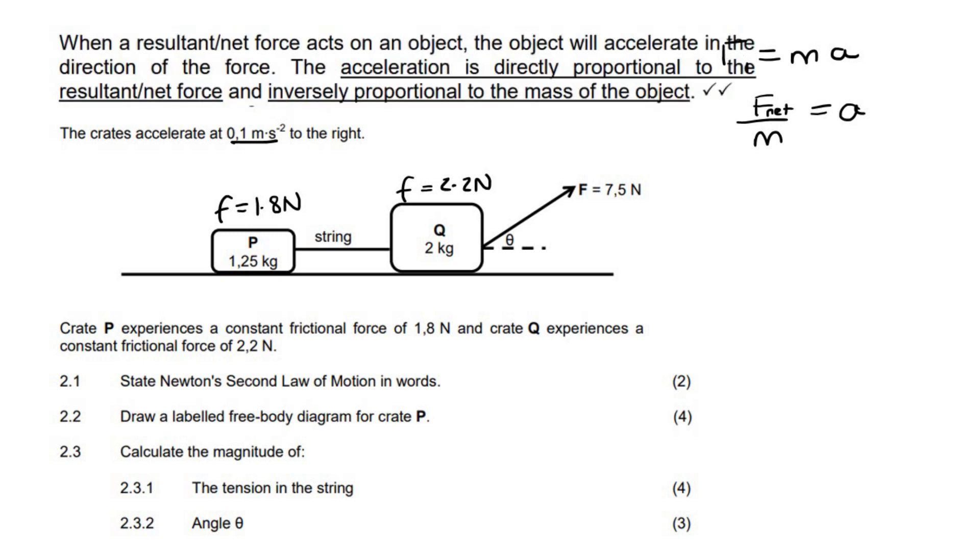When a resultant or net force acts on an object, the object will accelerate in the direction of the force. The acceleration is directly proportional to the resultant or net force and inversely proportional to the mass of the object. So remember, when it's Newton's second law, use this equation and then remember to get A alone and that'll help you to remember the definition of Newton's second law.